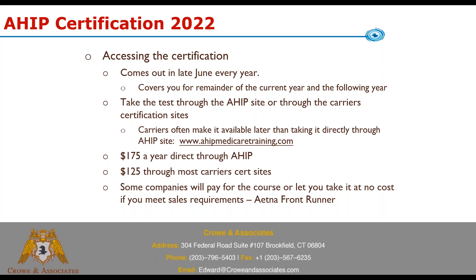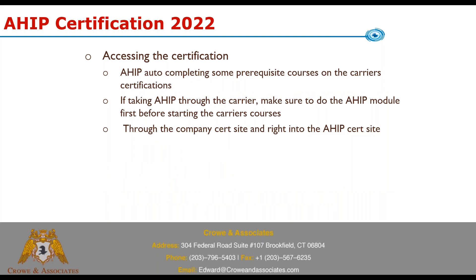There are some companies that will pay for the total cost of AHIP depending on how much business you've written during the year. Aetna is a prime example — I think last year it was 20 cases. But if you wrote enough Aetna cases, you get Frontrunner status and then you pay nothing for AHIP. So you take it through the Aetna certification portal and if you're a Frontrunner, you wouldn't be charged for AHIP.